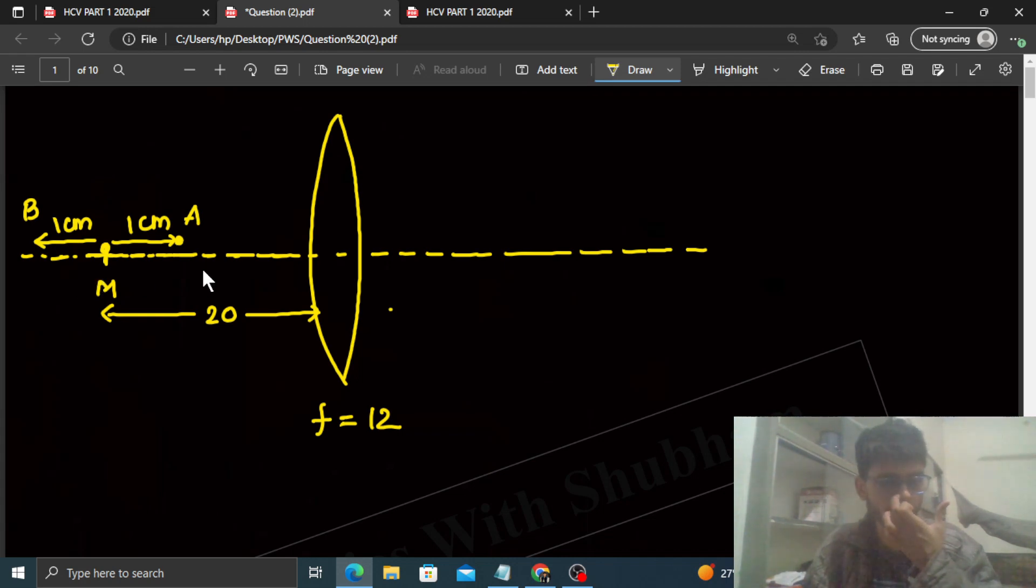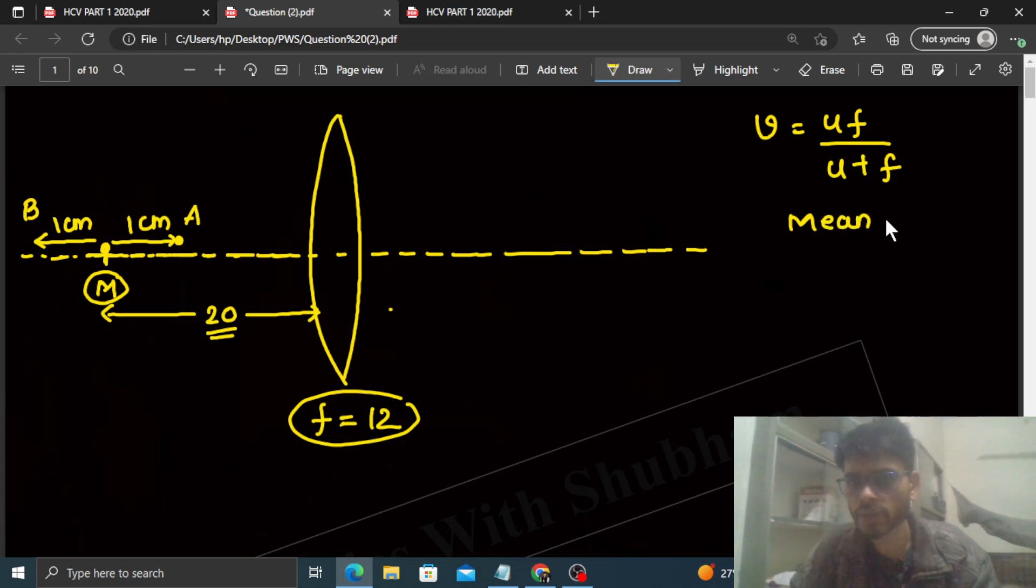We have to find the image location using lens formula. We can find out the image location. v will be simply uf divided by u plus f. Now f value is 12. If we talk about mean position, what will be the value of u at mean position? Minus 20. So for mean position, your u will be minus 20 and f value is constant, that is 12.